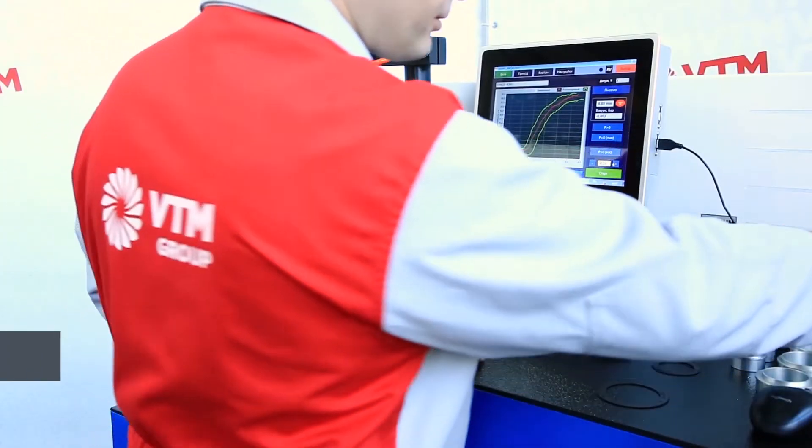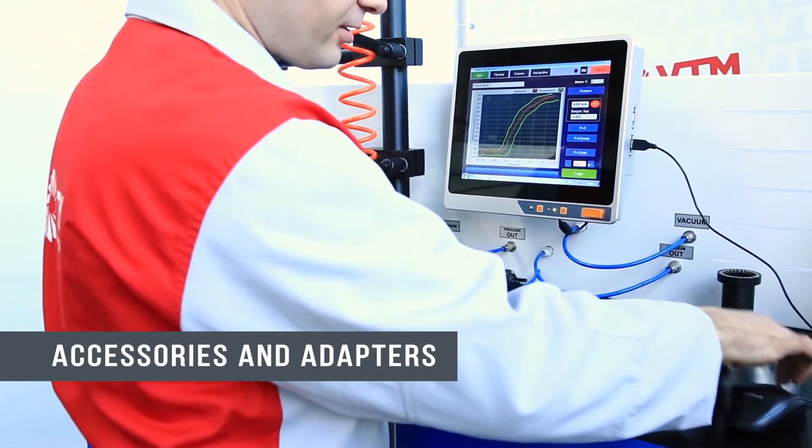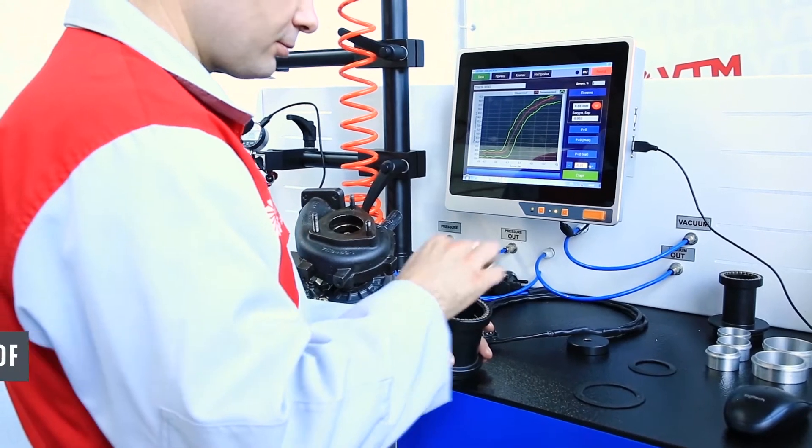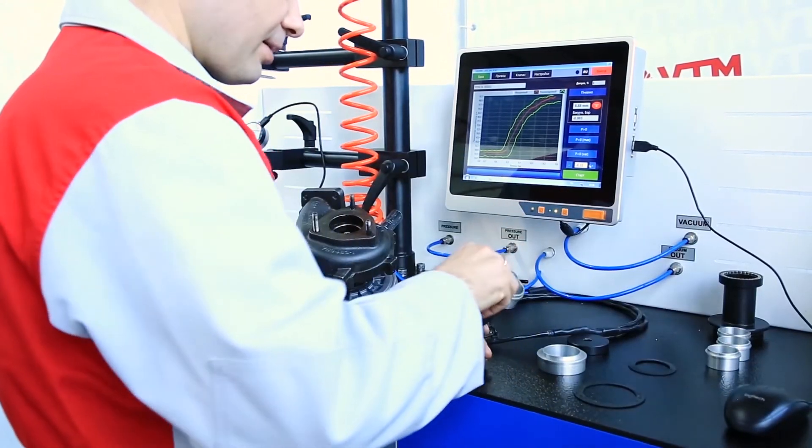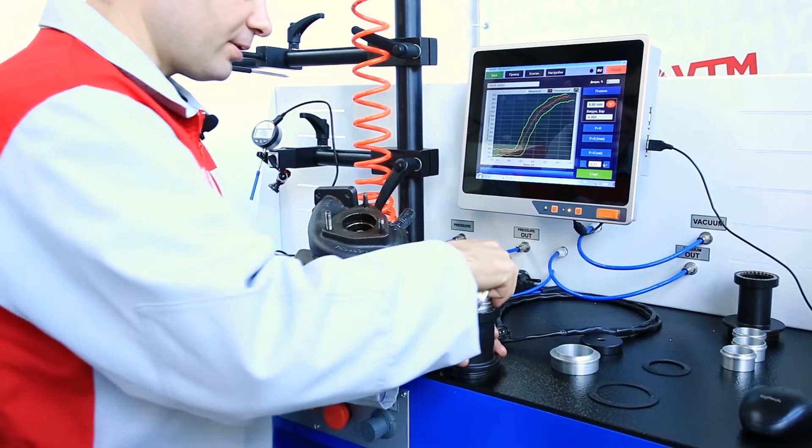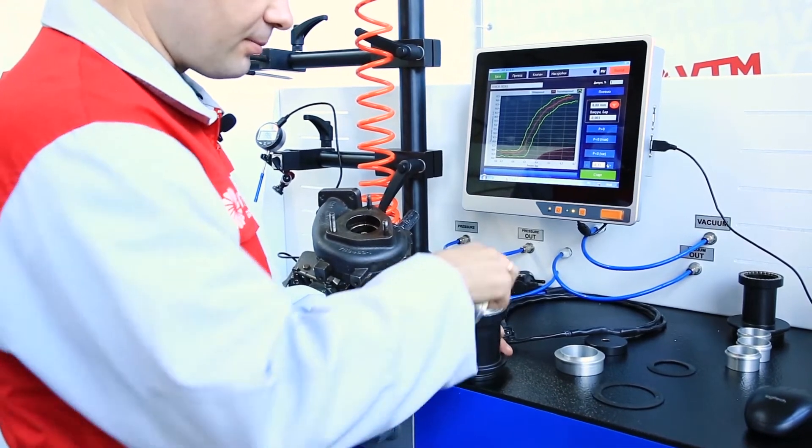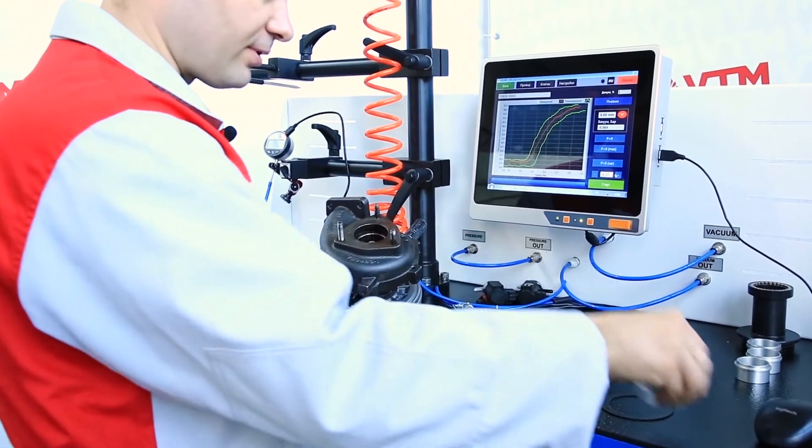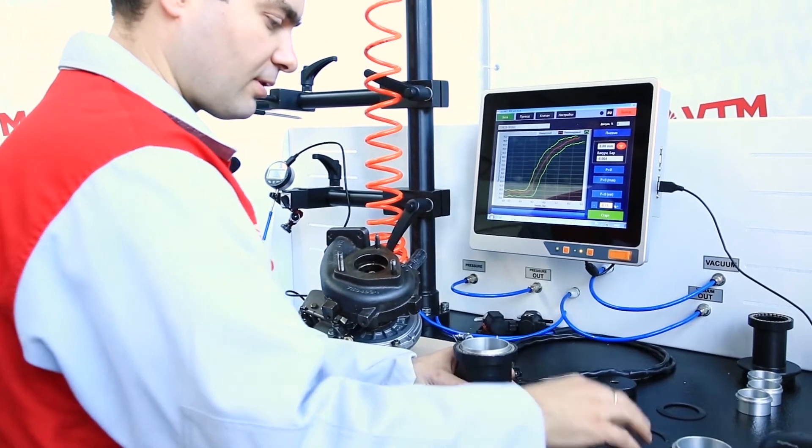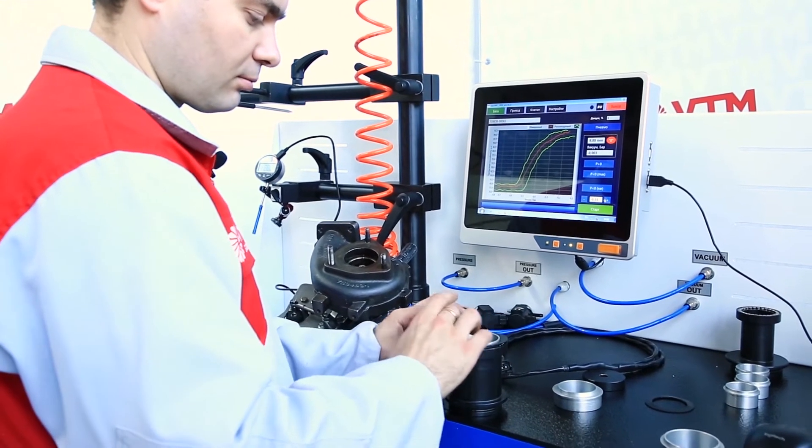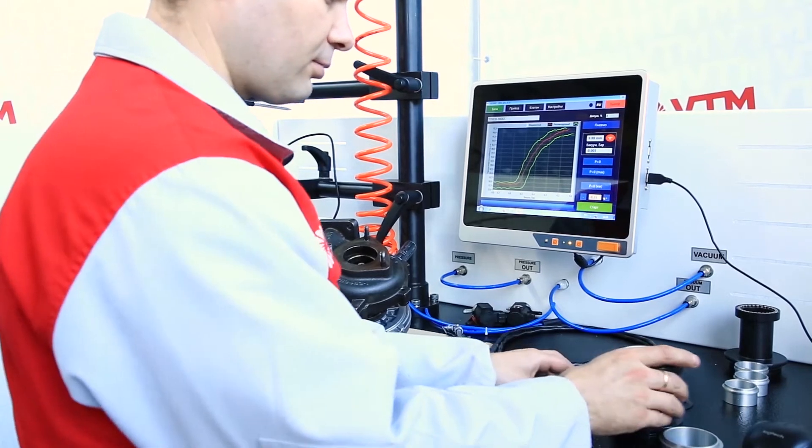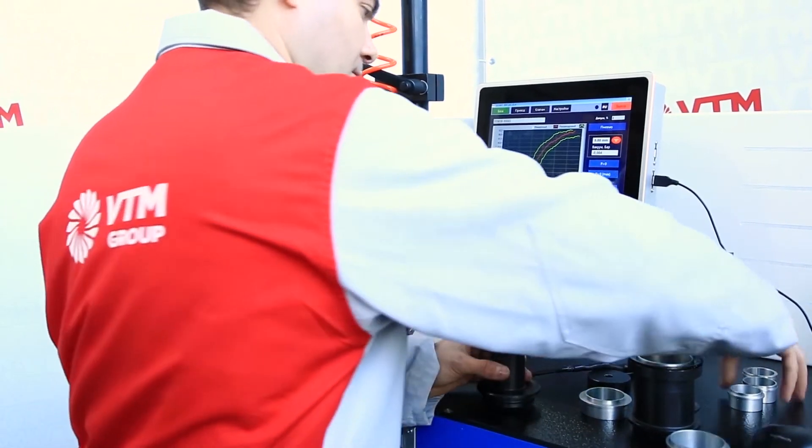The complete set of the machine includes adapters with centering bushings. Each bushing corresponds to the diameter of the turbine inlet in order to center the adapter. There are aluminum inserts, bushings. A sleeve is placed, an elastic band is placed. There is also a large and a small adapter for smaller turbines.